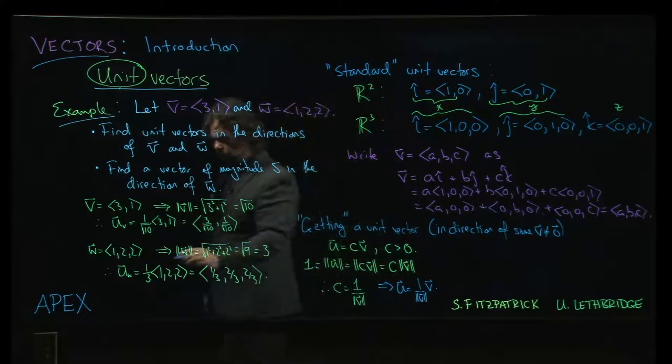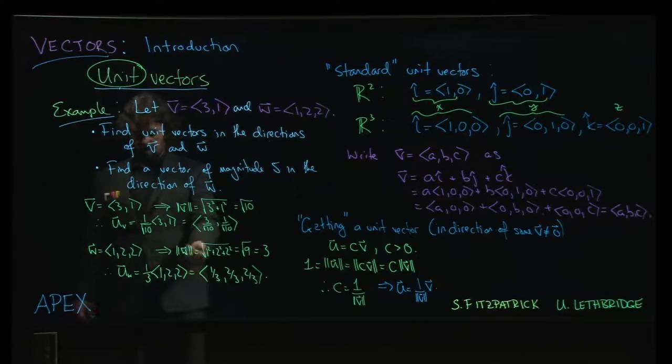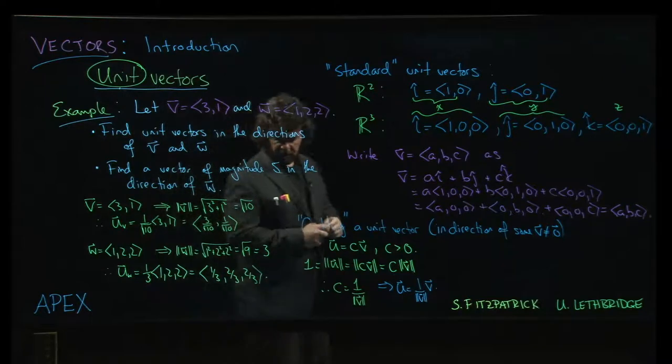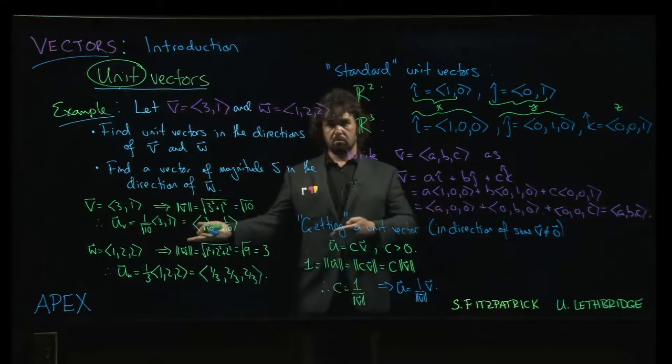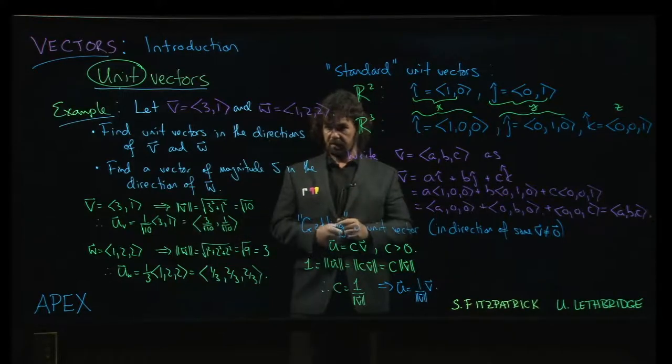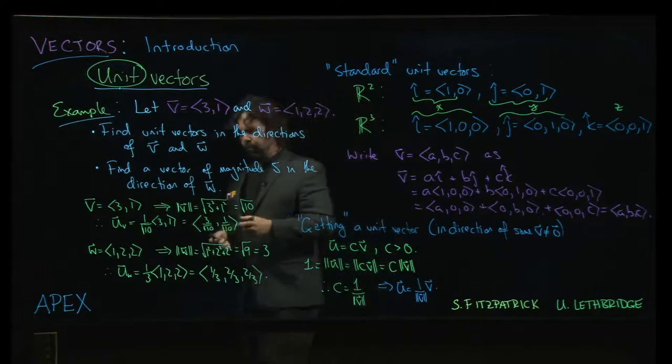And we know that this unit vector down here, uw, is in the direction of w and it has a magnitude of 1, right? So if I want a vector of magnitude 5, well that's 5 times 1. So I should multiply by this scalar 5, right?